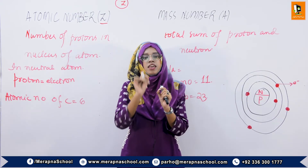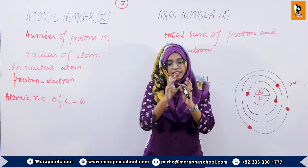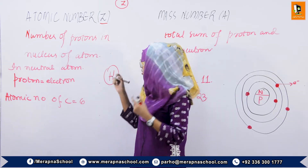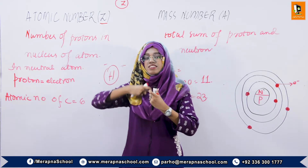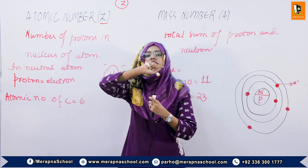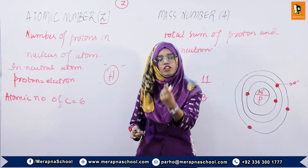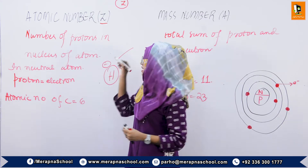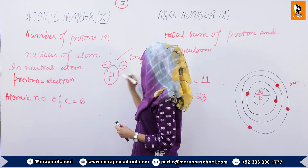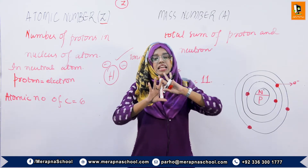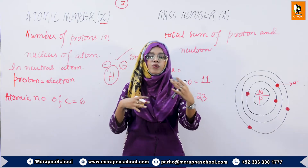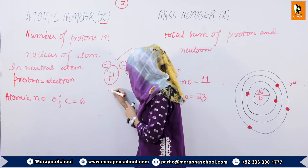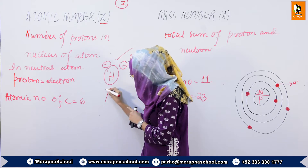One thing to keep in mind: a neutral atom, like hydrogen, is not positive or negative. When an atom loses an electron it gains a positive charge, and when it gains an electron it carries a negative charge — it becomes an ion. But in a neutral state, the number of protons and the number of electrons will be equal.